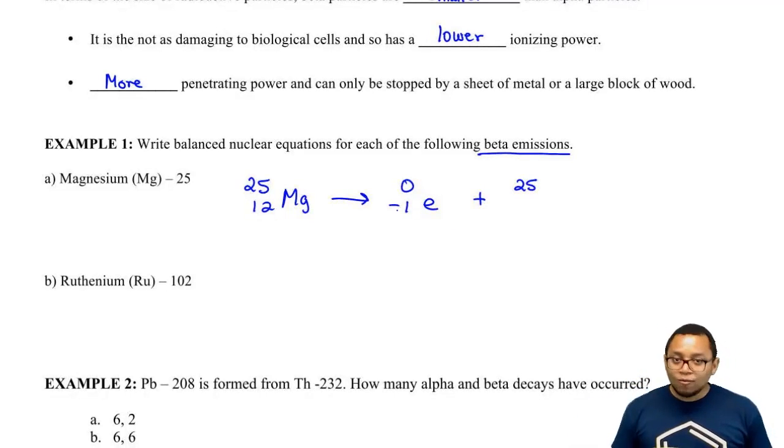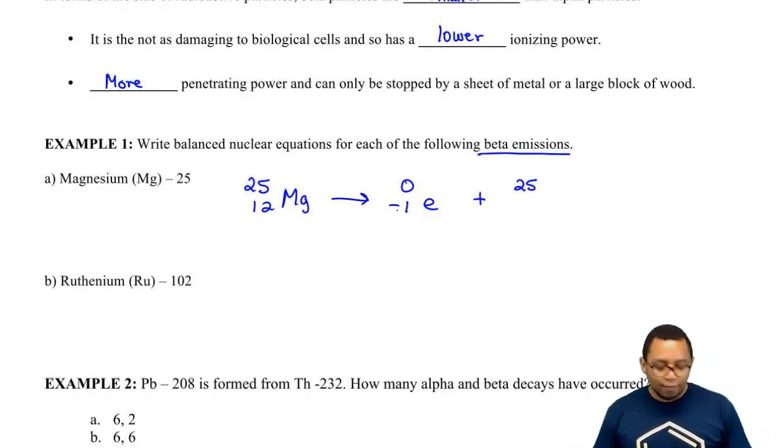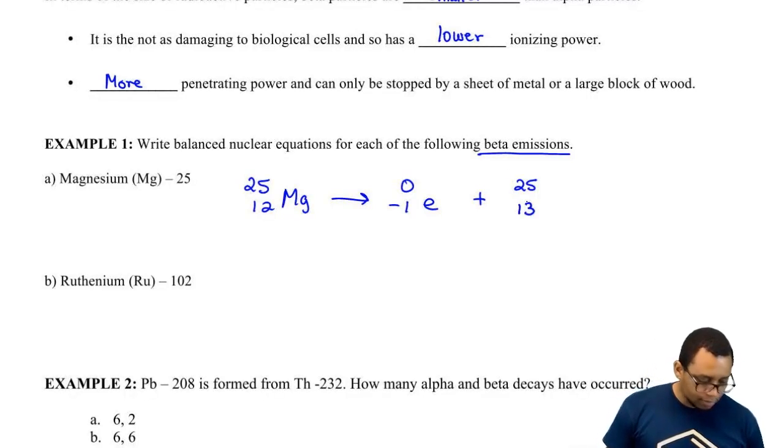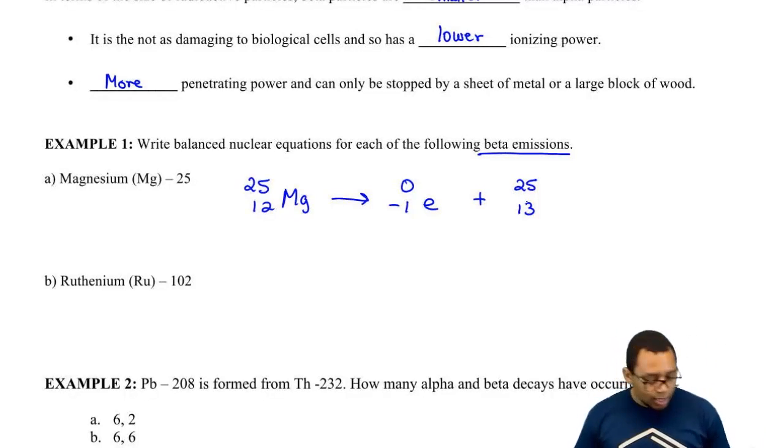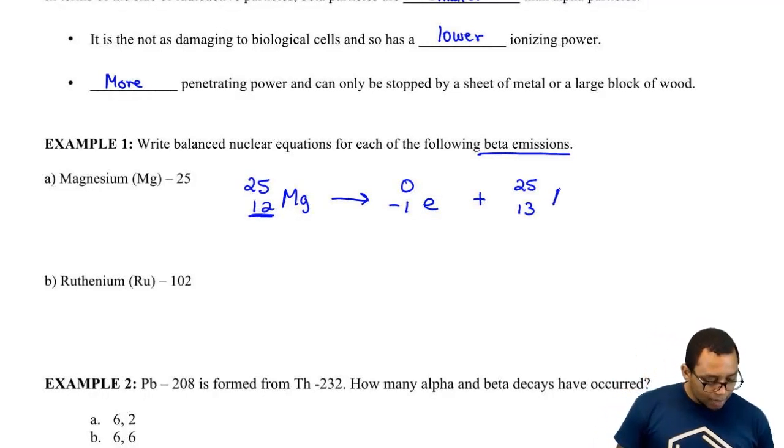And then here, negative 1 plus what number gives me 12? It'd have to be 13 because 13 minus 1 gives me the 12 I started out with initially. So this element would be aluminum.